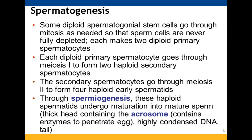Some diploid spermatogonial stem cells do not go through meiosis — they just go through mitosis so that there are plenty of sperm cells available throughout the male's life. When they go through mitosis, they produce two diploid primary spermatocytes. Those diploid primary spermatocytes are the ones that go through meiosis I, making two haploid secondary spermatocytes. The secondary spermatocytes then go through meiosis II to produce four haploid early spermatocytes.